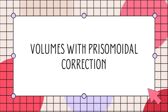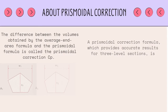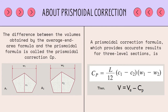My name is Nika and I am going to talk about volumes with prismoidal correction. The difference between the volumes obtained by the average end area formula and the prismoidal formula is called the prismoidal correction, or CP. The prismoidal correction formula, which provides accurate results for three-level sections, is: CP equals L over 12, multiplied by (C1 minus C2), multiplied by (W1 minus W2). Alternatively, V equals V_E minus CP.